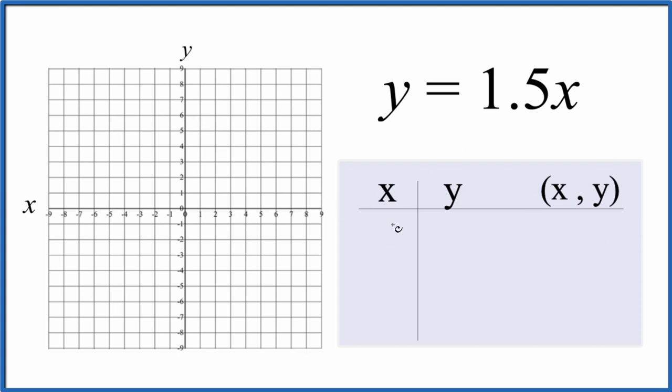I always like to start out with x is zero because 1.5 times zero, that's just zero. Next, let's choose how about two? Because 1.5 times two, that's three and that's a whole number, which is kind of nice. And then negative two, 1.5 times negative two, that's negative three.